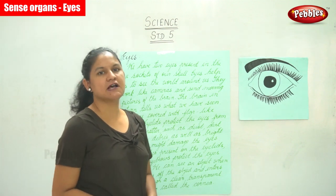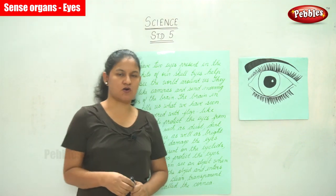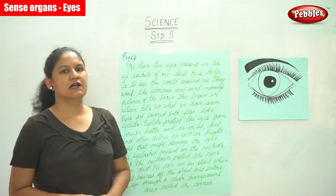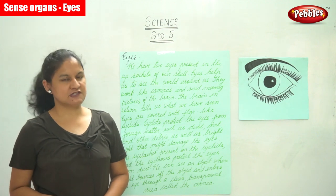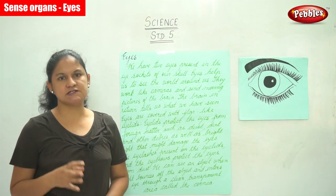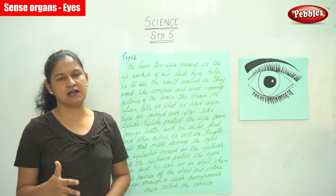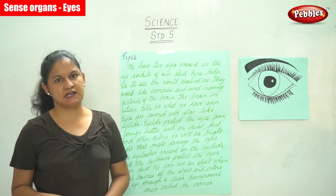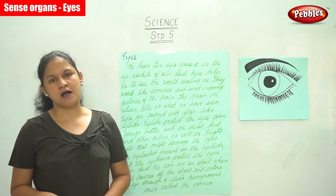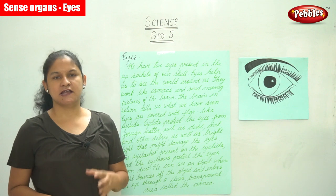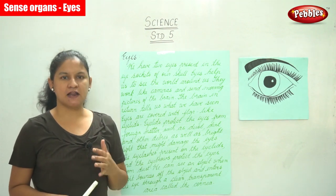The next topic in our session is the sense organs. We have five sense organs: the eyes, nose, ears, tongue, and skin. Let us talk about the eyes — the explanation about the eyes and how we should take care of our eyes.